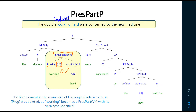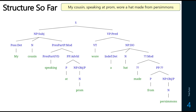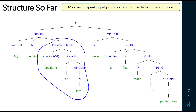That's what the present participle phrase looks like. So for our structure, 'my cousin speaking at prom wore a hat made from persimmons' — 'speaking at prom' is a present participle phrase modifier, where 'speaking' is an intransitive verb present participle that takes a prepositional phrase adverbial 'at prom' because it's talking about location. That's the structure of the present participle phrase.